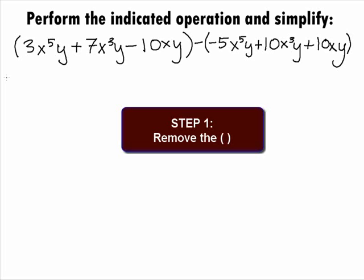The terms in the first parentheses will be unchanged, so when we remove that parentheses, we get 3x to the 5th y plus 7x cubed y minus 10xy.